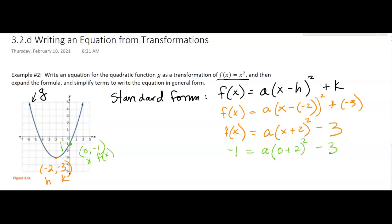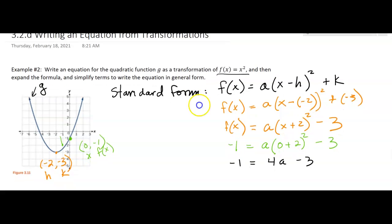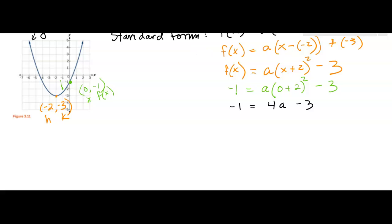Alright, then I can simplify. Negative 1 equals 4a minus 3. Let's see. If I add the 3 over, then I'm going to have 2 equals 4a. And so I'm going to get a to be 1 half. Do I believe that a should be positive? Yes, because it's a right side up parabola. So I'm okay with that.